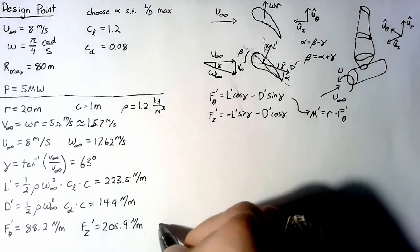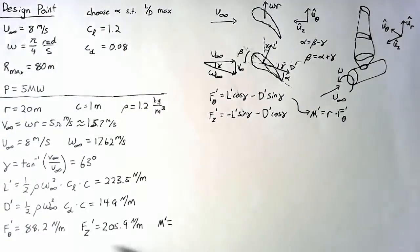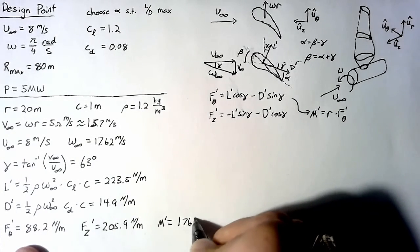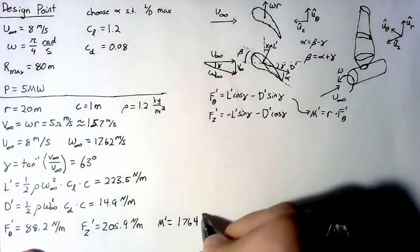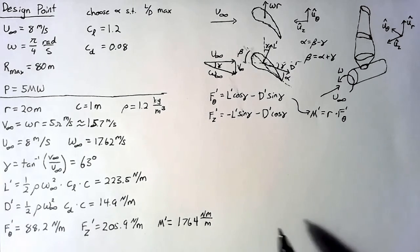And using our F theta, we can come up with a moment per unit span as well. So that's just 20 meters multiplied by 88, which comes out to 1,764 newton meters per meter. And we could simplify that to newtons. This helps us keep track of what the units actually mean.